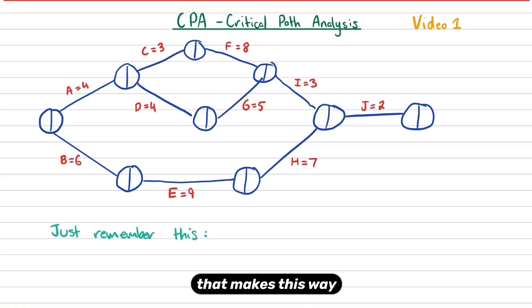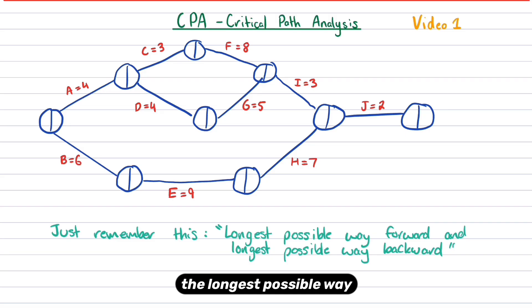I've figured out a way that makes this way easier to understand. So all you have to do, all you have to remember, ignore forward scanning, backward scanning, this and that. This is all you've got to remember. The longest possible way forward and the longest possible way backward.